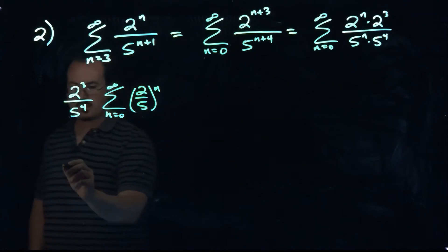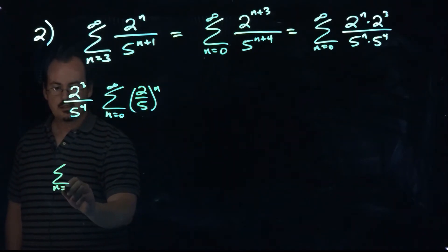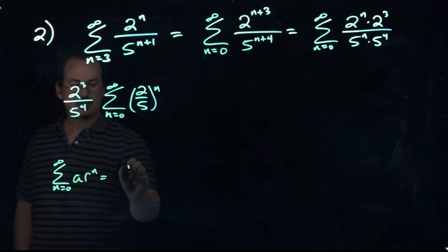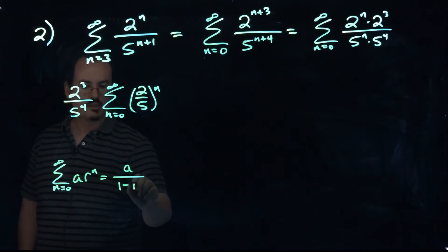And so remember what that formula is. I'll just remind us here. It says that if you've got the sum starting at zero of a r to the power of n, that's the same as a over one minus r.